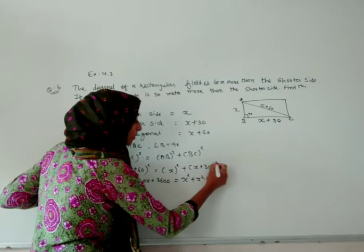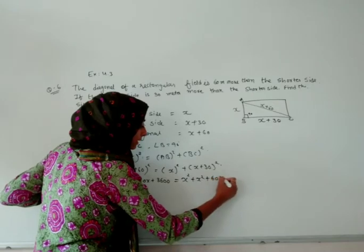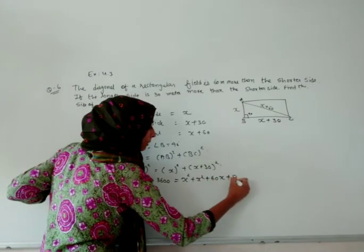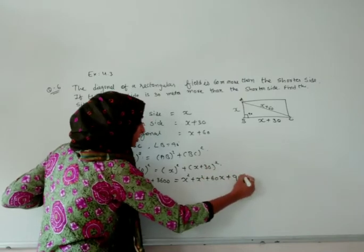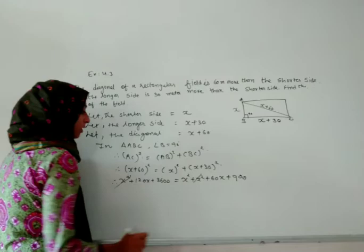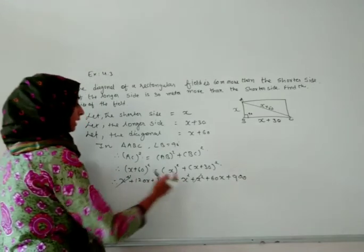Here we will write x squared. Here we will write 2ab, means 2 times 30x, and b squared means 30 squared, that will become 900. As we know, this x squared we can cancel out. This also we can cancel out.